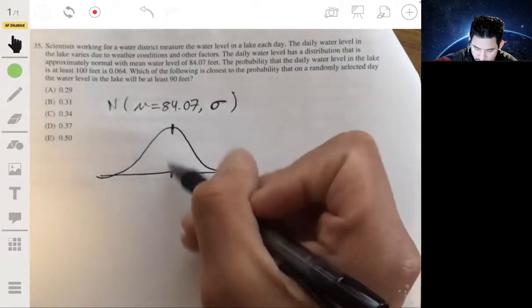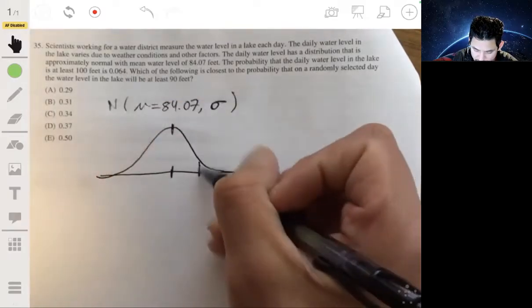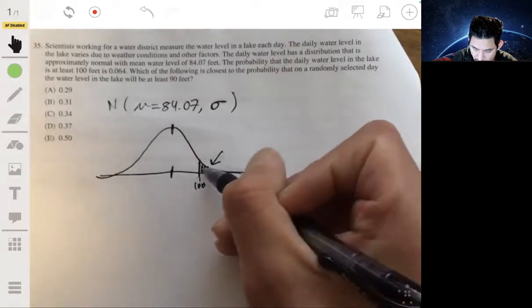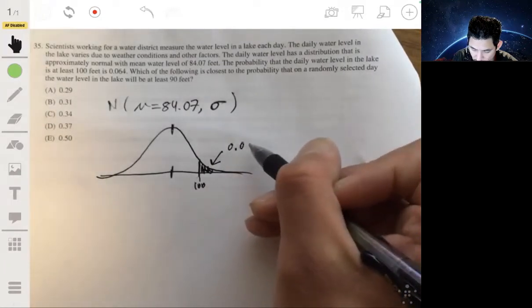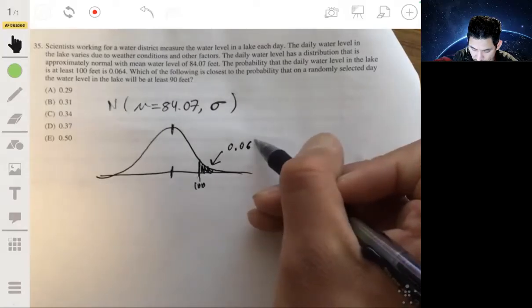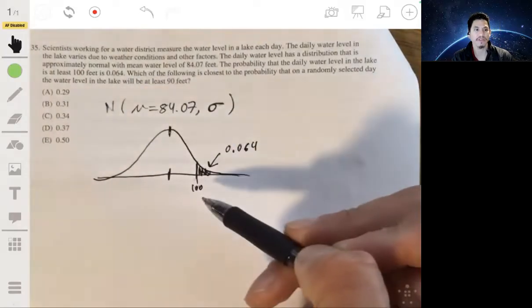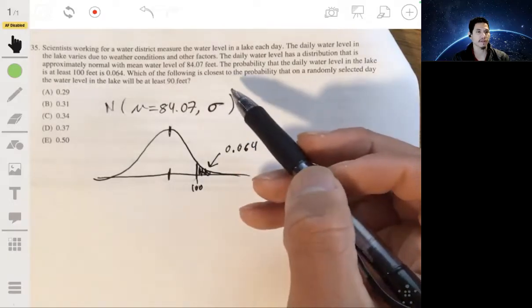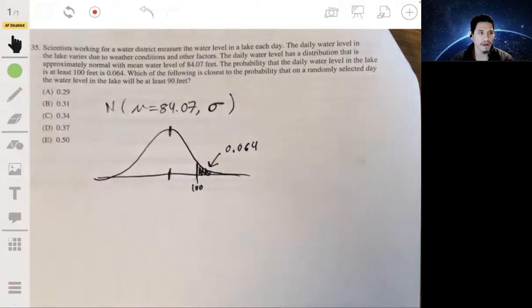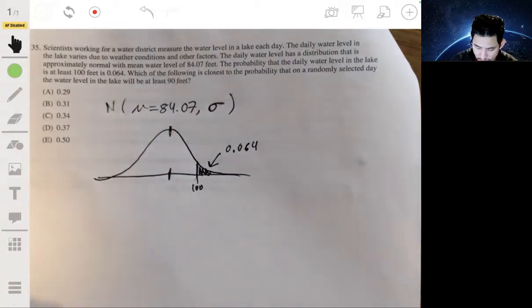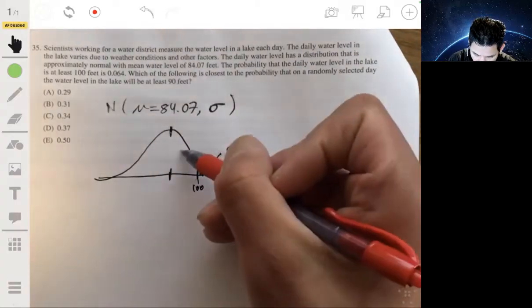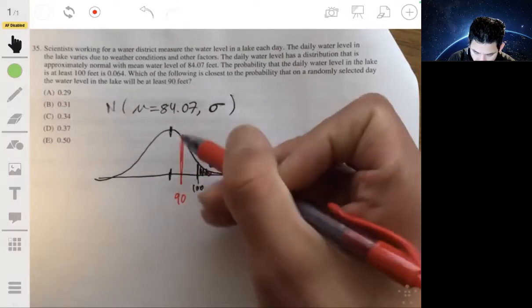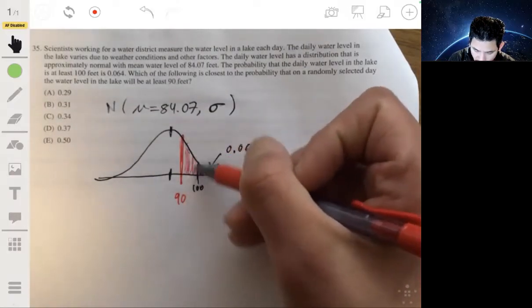84.07 is the mean, so it would be here. So 100, let's just say it's over here. And then this area would be about 0.064. That represents the probability of the value being at least 100 feet. And now we want to find what's the probability that the value would be 90 or greater. So let's put 90 somewhere over here. Cause we know it's greater than the mean. So essentially we want to find that red area.